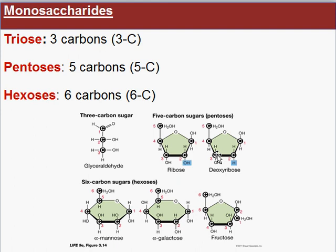Then there are six-carbon sugars, or C6 compounds. Six carbons is a hexose, like a hexagon. Examples include glucose, fructose, and mannose — they all have six carbons. Even if you don't know the name, you can recognize it's a hexose because of the number of carbons.